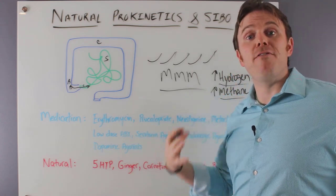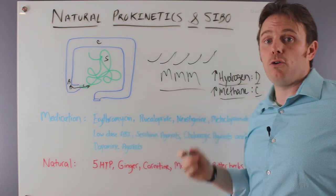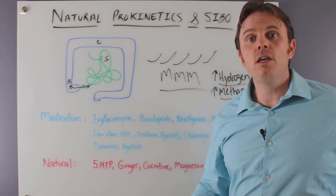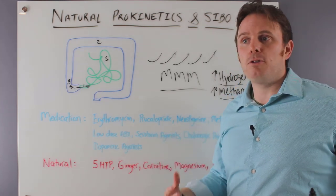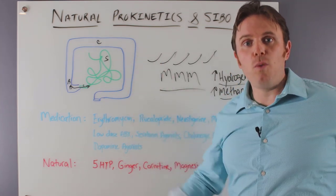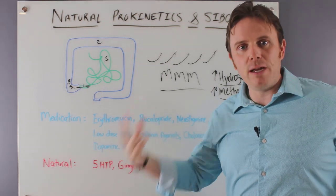So anything that can disrupt the vagus nerve will affect that migrating motor complex. So any kind of stress, any kind of just poor stomach acid, poor enzymes, emotionally, the adrenals are going into overdrive, whether it's sleep or inflammation,